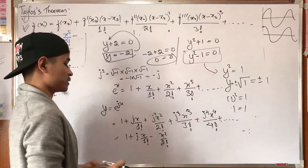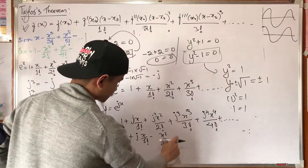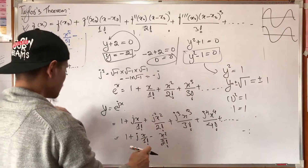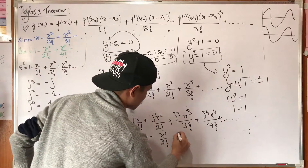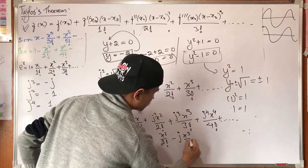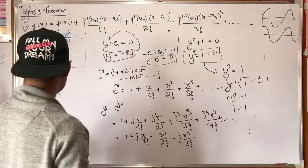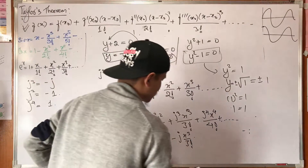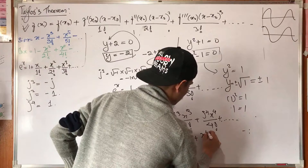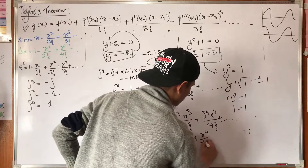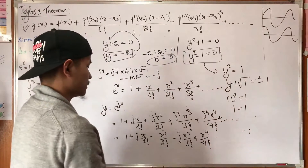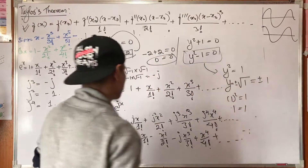Continuing the substitution: j cubed is minus j, so the cube term becomes minus j times x cubed over 3 factorial. j to the power of 4 equals 1, so that term becomes plus x to the power of 4 over 4 factorial. Plus dot dot dot.